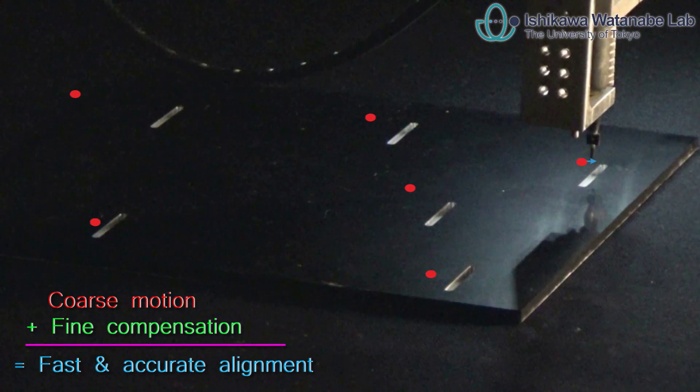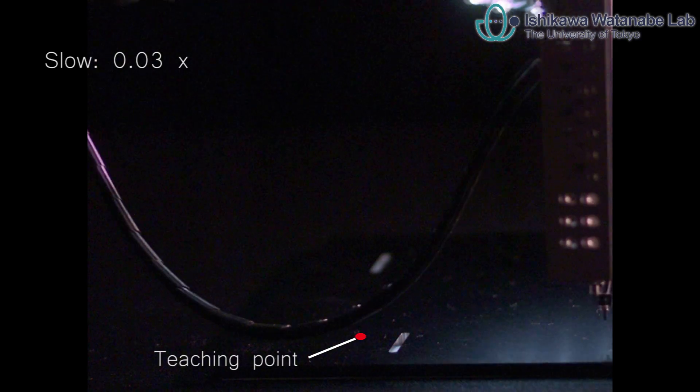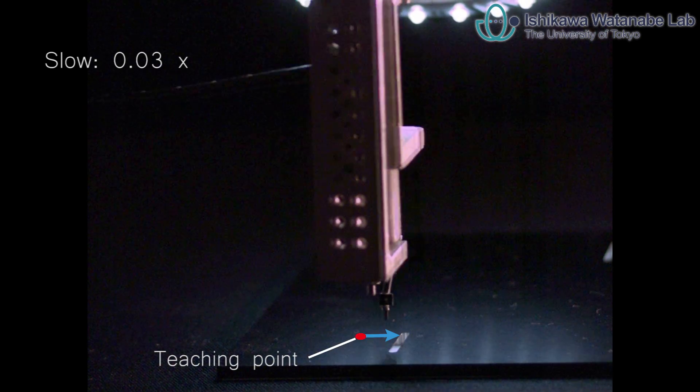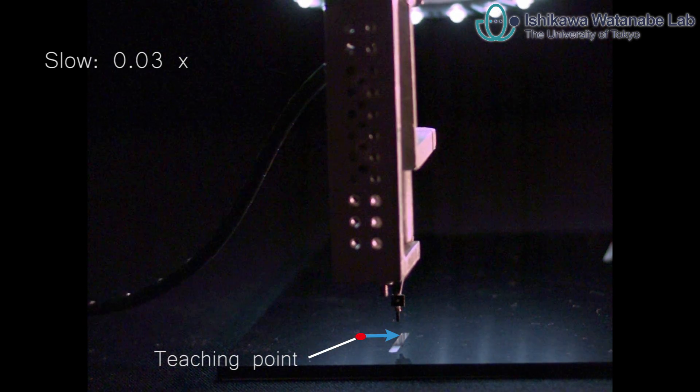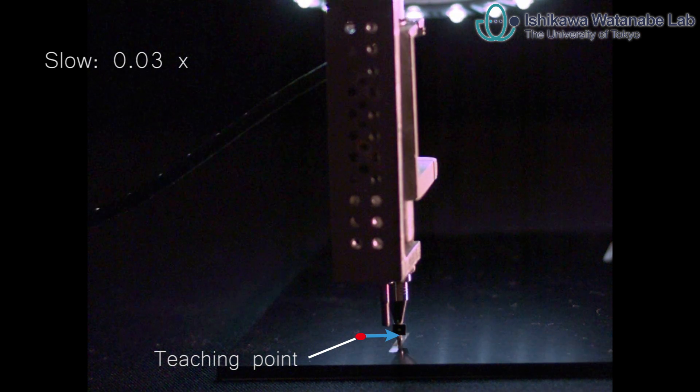This technology can improve existing industrial robots' performance while at the same time reduce the workload of robot operators. It may find applications in many industrial tasks, such as in welding, painting, as well as assembly.